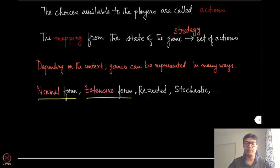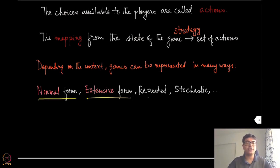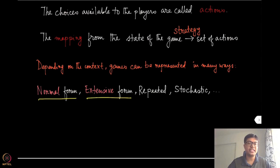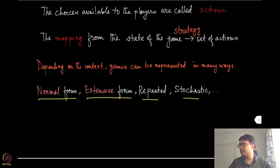Extensive form games are sequential games: one player makes a move, based on that the second player makes a move, and then the first player moves again. Imagine a game like chess, which is more succinctly represented in the form of an extensive form game. Similarly there are repeated games, stochastic games, and various other forms of games which we will not be discussing in this course.